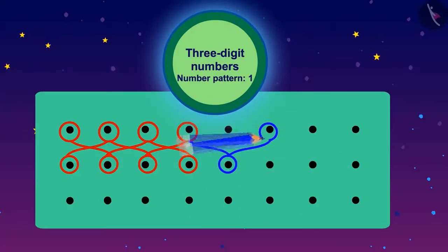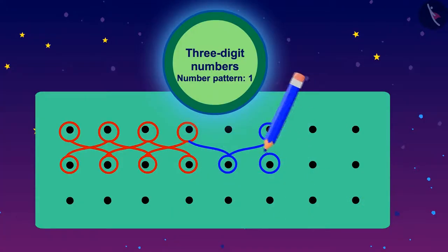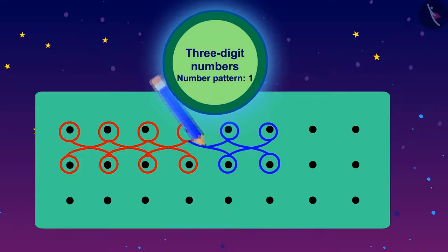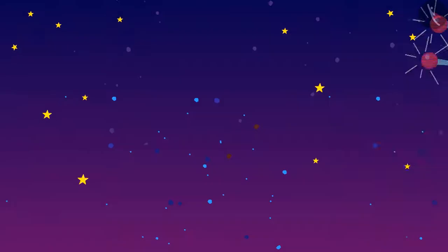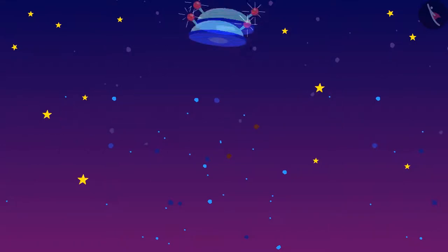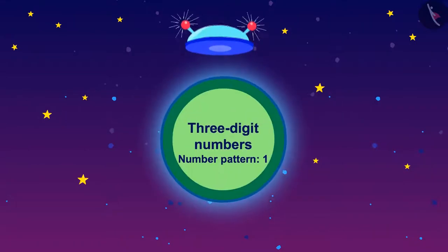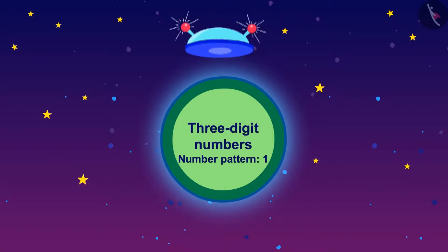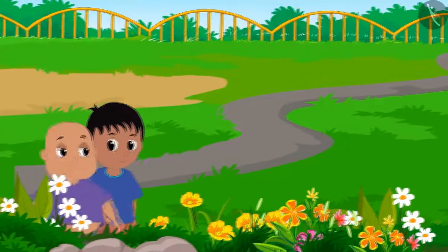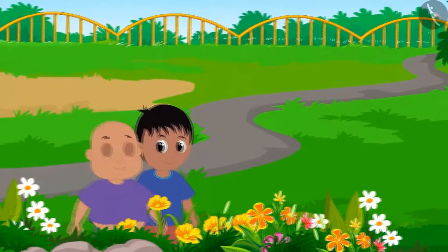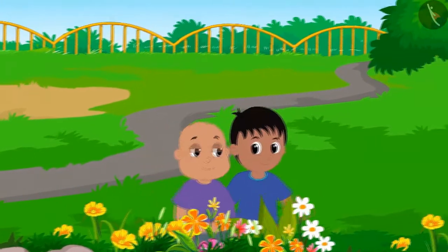Do you remember the patterns you have learned in the lesson of the dot grid? Can we also create a pattern with numbers? Let's learn about number patterns made with three-digit numbers in this lesson. Raju and Babloo are walking in the park.